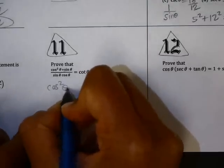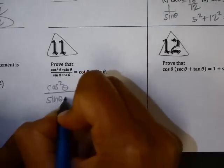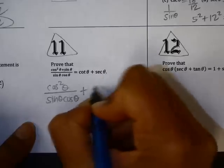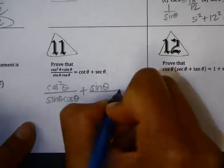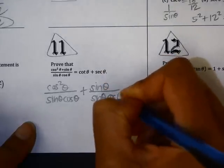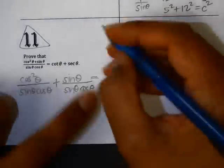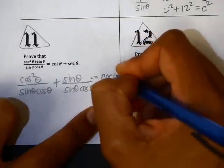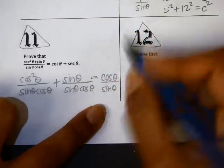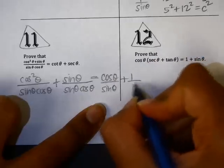So cosine squared gets divided by sine theta cosine theta, and sine theta also gets divided by sine theta cosine theta. This equals cotangent, which is equal to cosine over sine. Secant is 1 over cosine.